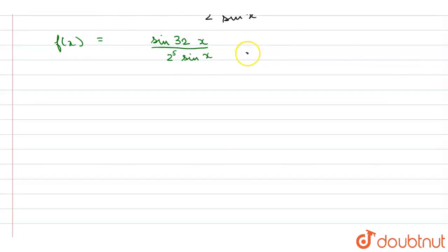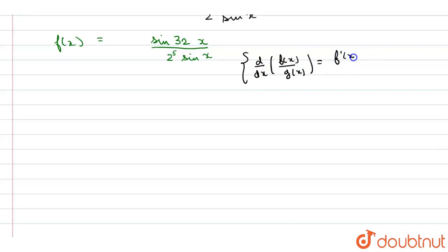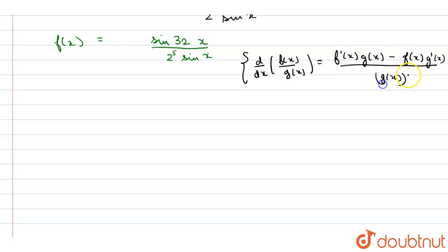Now we will use the quotient rule: the derivative of f(x)/g(x) is equal to [f'(x) · g(x) − f(x) · g'(x)] / [g(x)]². Using this, we will get f'(x) equal to: